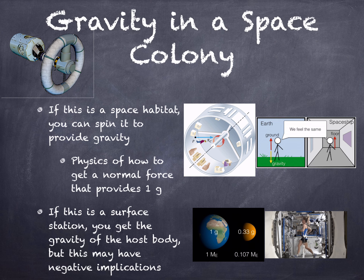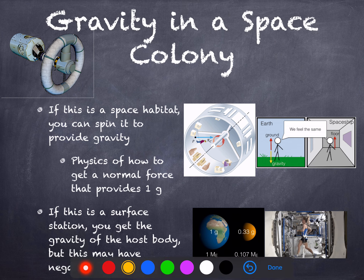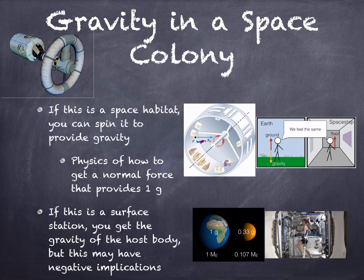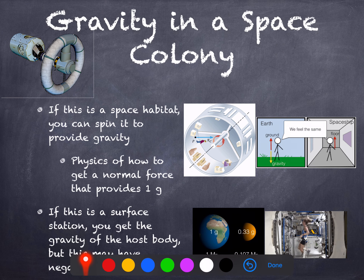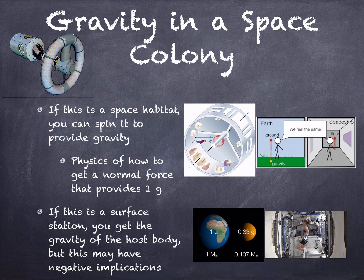Now if you are on a surface colony such as Mars, the situation is a little different because you can't really spin Mars, and the gravity you have there is the gravity you have there. In the case of Mars, it is only about a third of Earth's acceleration — 0.33g. It is unclear how much gravity we need at minimum for our muscles and bodies not to be severely negatively impacted. You may need to do things such as what is done on the International Space Station, where tethers provide a tension force against your body as you exercise. This is not completely effective but may help mitigate the negative implications of being in a low-G environment.